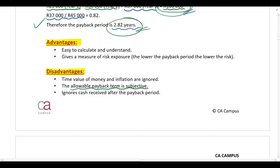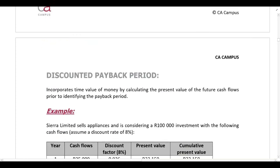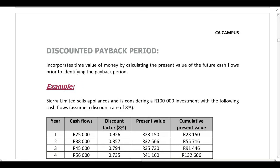Lastly, this method ignores any cash received after the payback period. In our calculation we were only interested in the cash flows needed to recover the original investment cost of 100,000 rand; any cash flows received after that point are completely ignored. We then need to look at the discounted payback period.